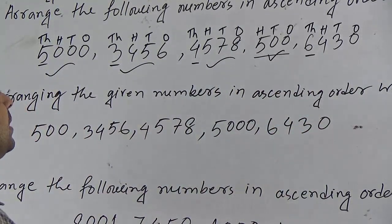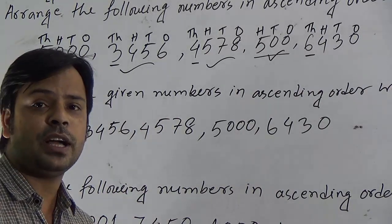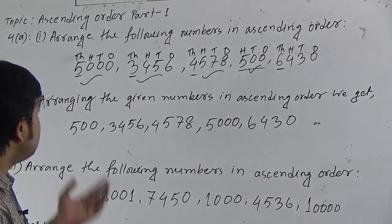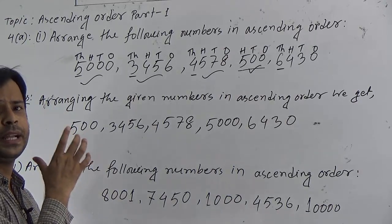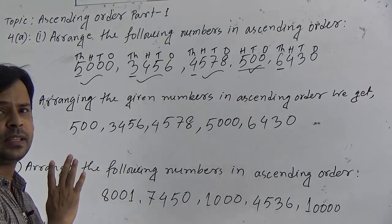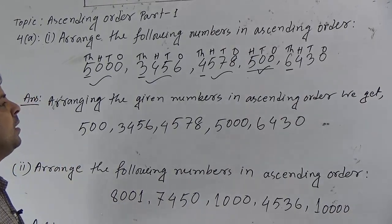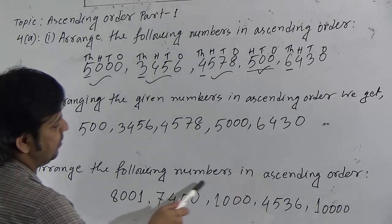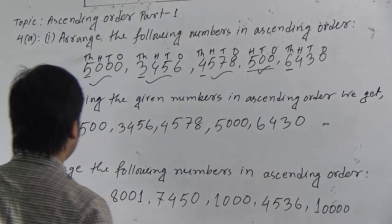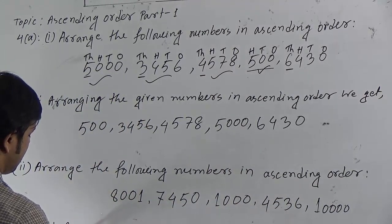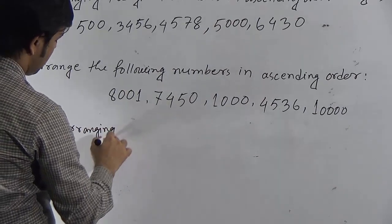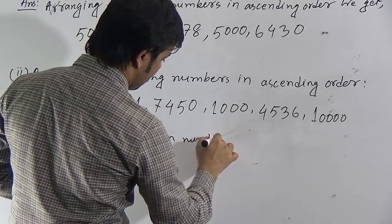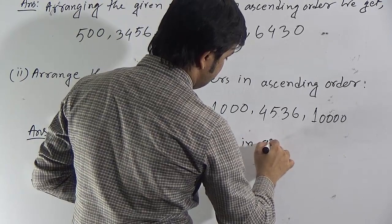6,430 will be the greatest among these numbers. So dear students, I hope you have understood our first question. To arrange numbers in ascending order, at first you have to compare the highest position. Now let us go to the next question: arrange the following numbers in ascending order.